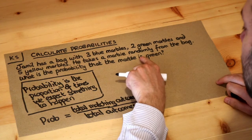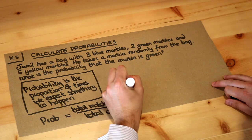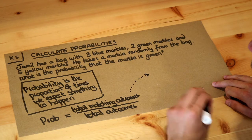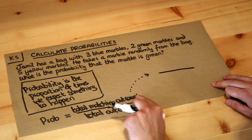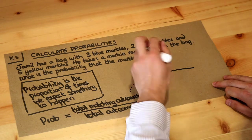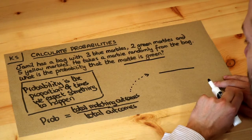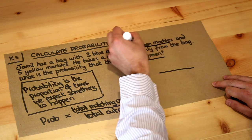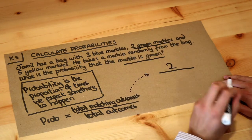So we want to find the probability that the marble is green using this formula. The probability of getting green is going to be the total number of matching outcomes. Now, of all our marbles, what are the matching outcomes—the marbles that are green? We're interested in the marbles that are green. How many marbles match that? Well, we have two green marbles, so the numerator is going to be two.